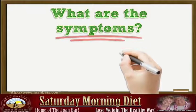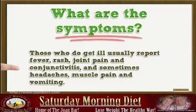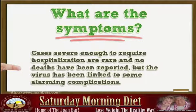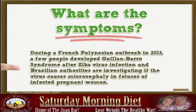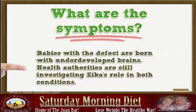What are the symptoms? Only 1 in 5 people infected with Zika virus experience symptoms. Those who do get ill usually report fever, rash, joint pain and conjunctivitis, and sometimes headaches, muscle pain and vomiting. The illness lasts about a week. Cases severe enough to require hospitalization are rare and no deaths have been reported, but the virus has been linked to some alarming complications. During a French Polynesian outbreak in 2013, a few people developed Guillain-Barré syndrome after Zika virus infection. Brazilian authorities are investigating if the virus causes microcephaly in fetuses of infected pregnant women. Babies with this defect are born with underdeveloped brains. Health authorities are still investigating Zika's role in both conditions.